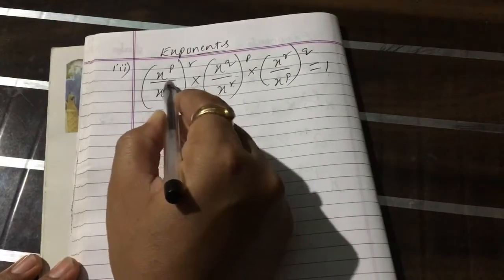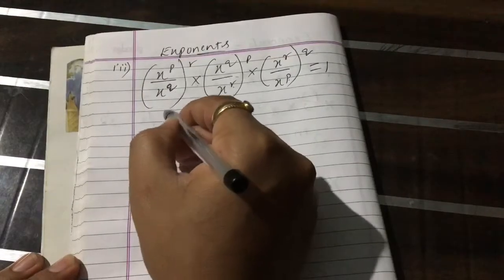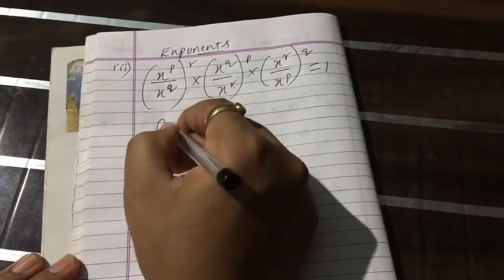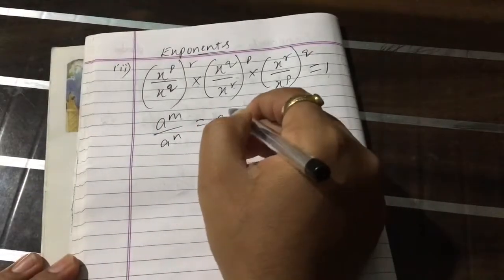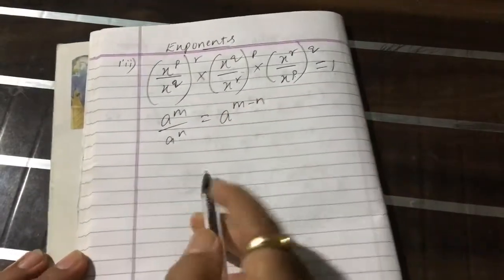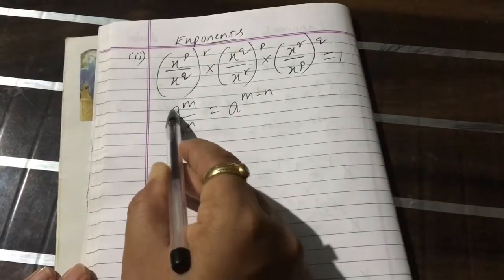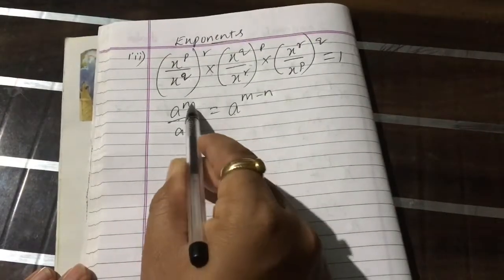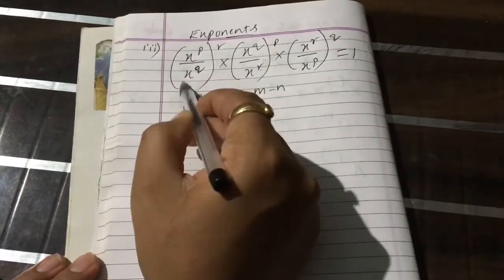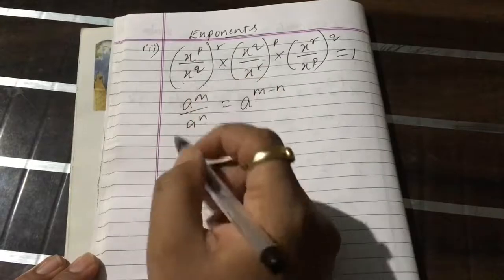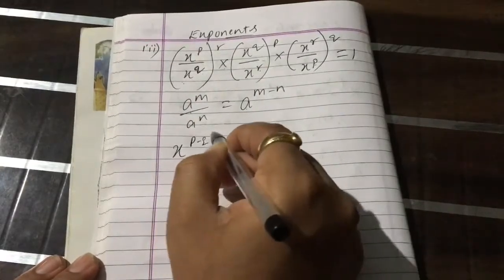In division we can subtract the powers. The exponent law says: a^m divided by a^n is equal to a^(m-n). So if we have the same base and different powers in division, we keep the single base and subtract the powers. Here we have x and x with different powers, so I take a single base and subtract the powers, keeping that power r as it is.